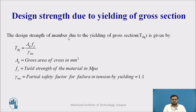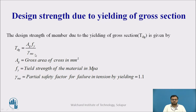Now we'll see the design of a tension member. Basically we have to satisfy three criteria. The first one is the design strength due to gross section yielding. The strength in gross section yielding is given by TDG = AG · Fy / γM0, where AG is the gross area of the cross section in mm², Fy is the yield strength of the material in megapascals, and γM0 is the partial safety factor for failure in tension by yielding, which equals 1.1.